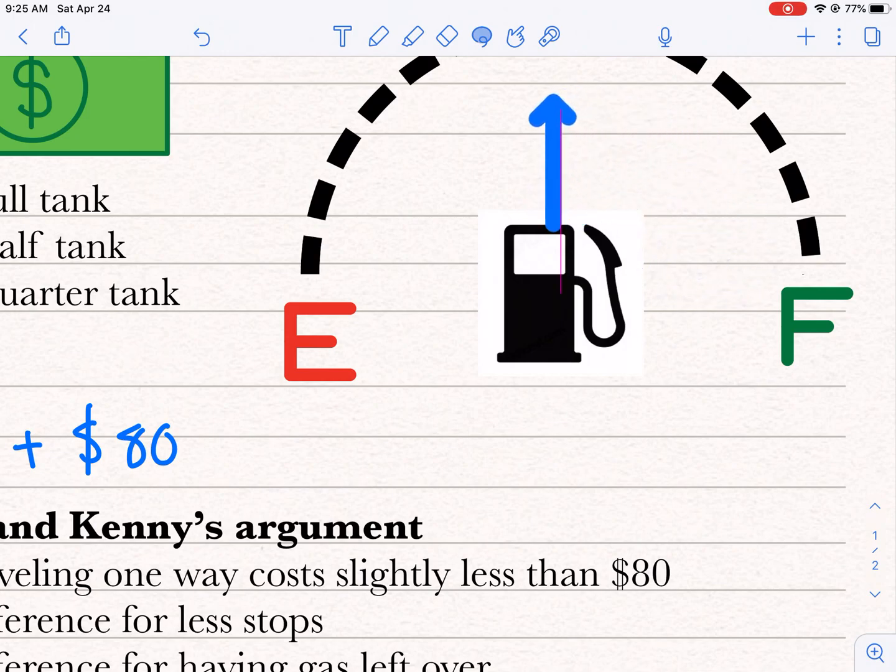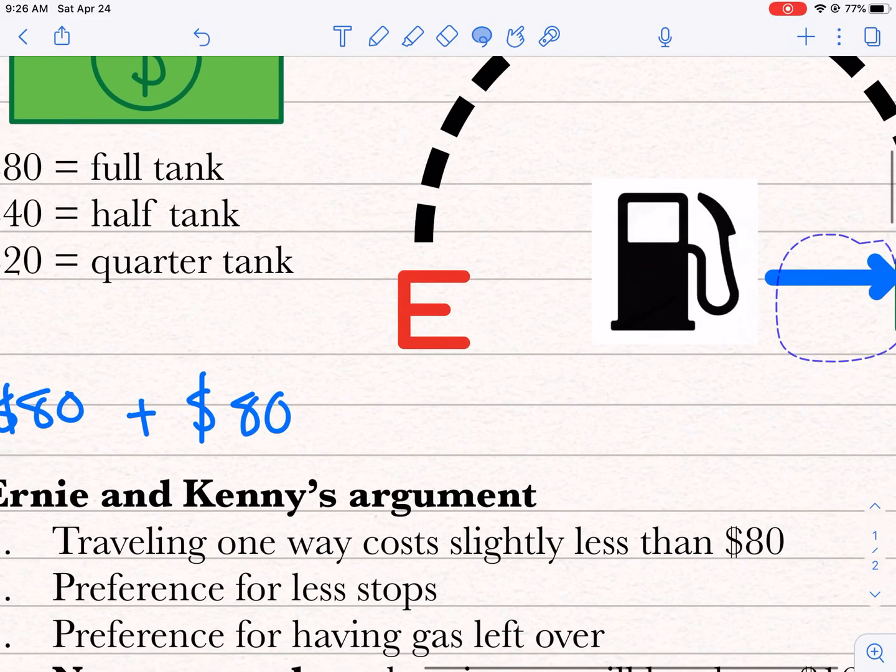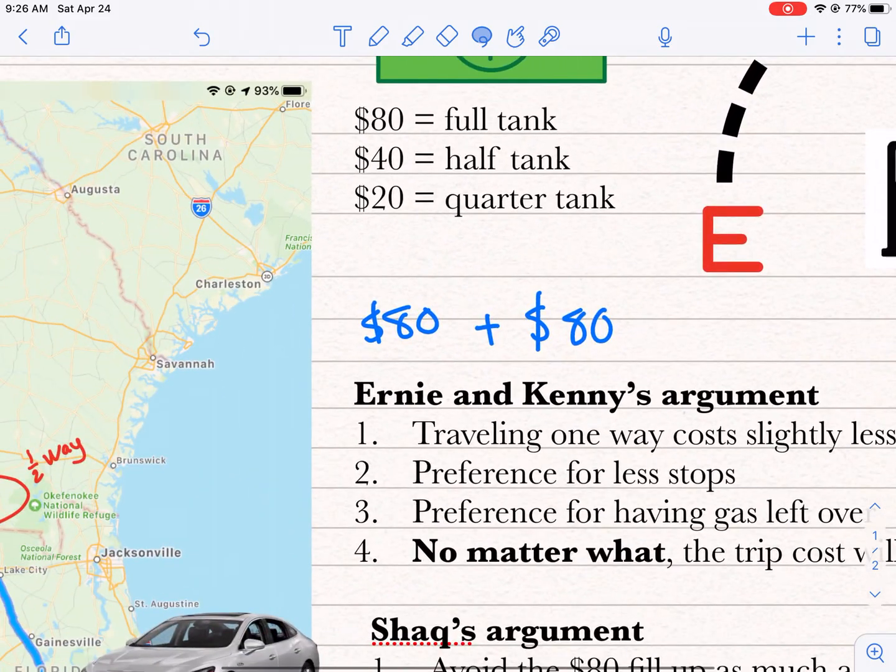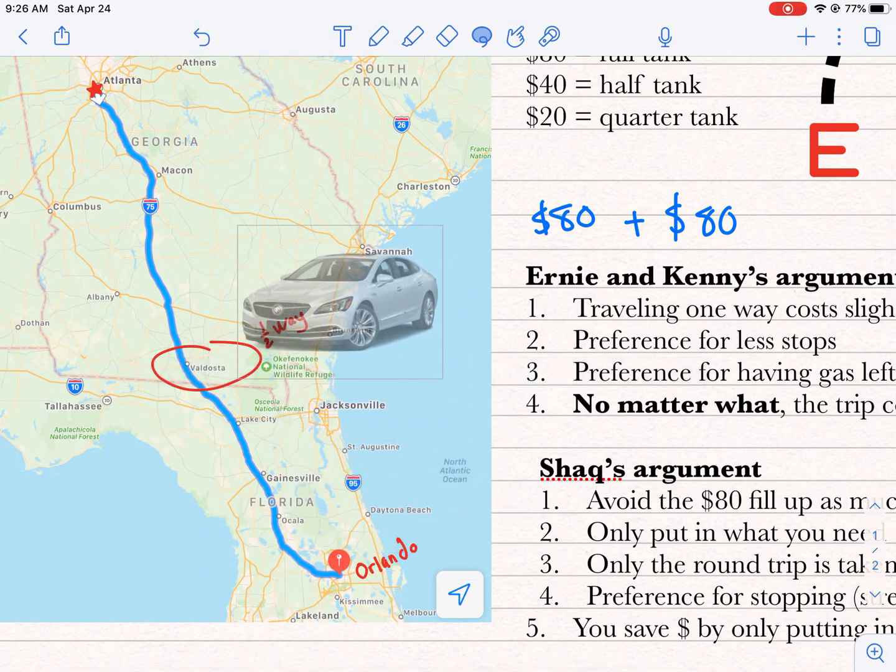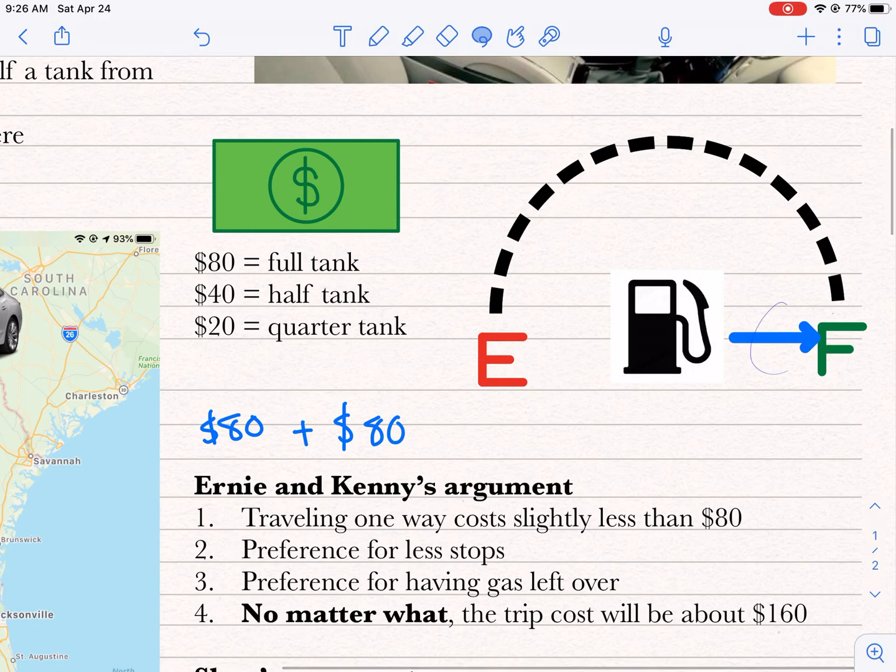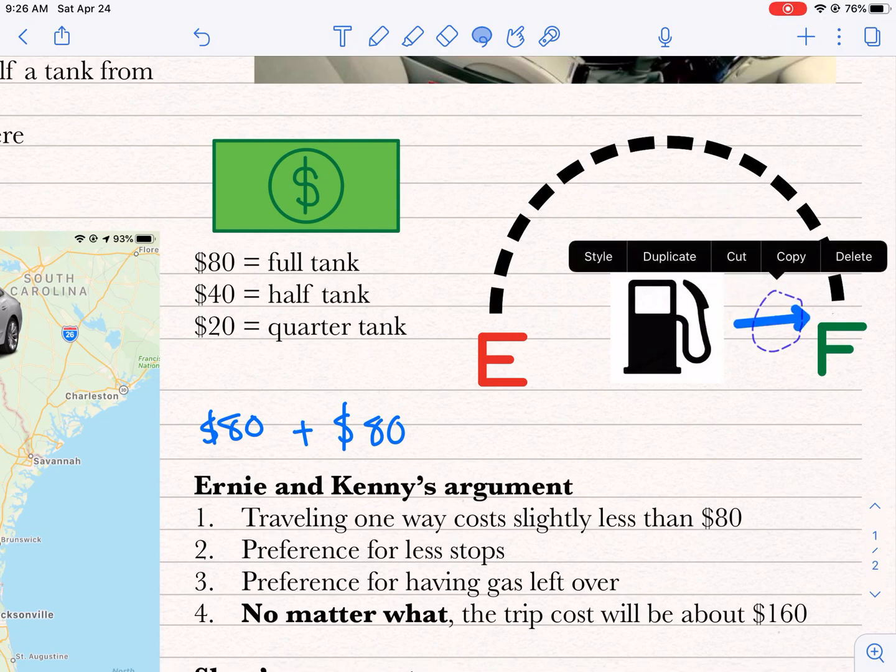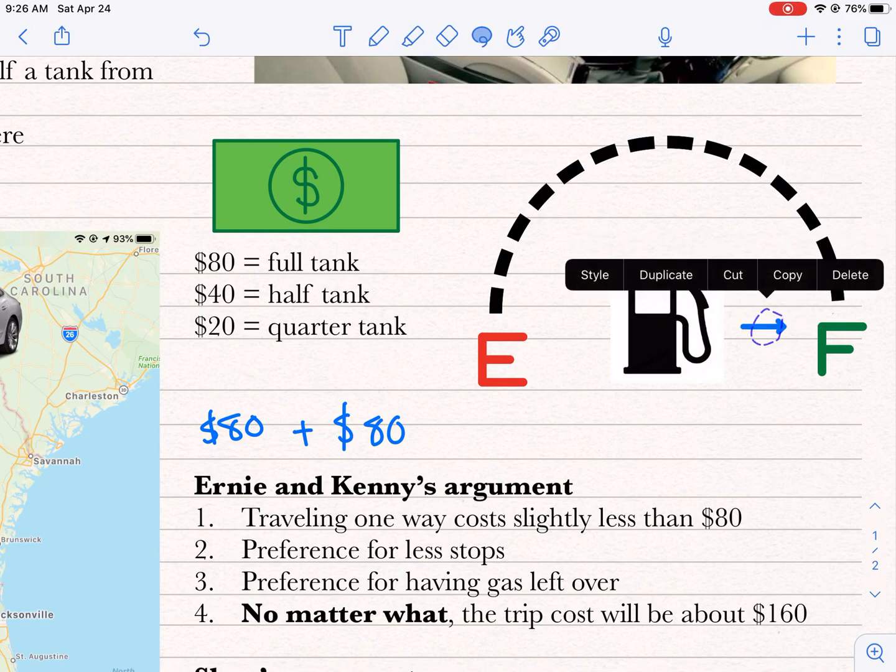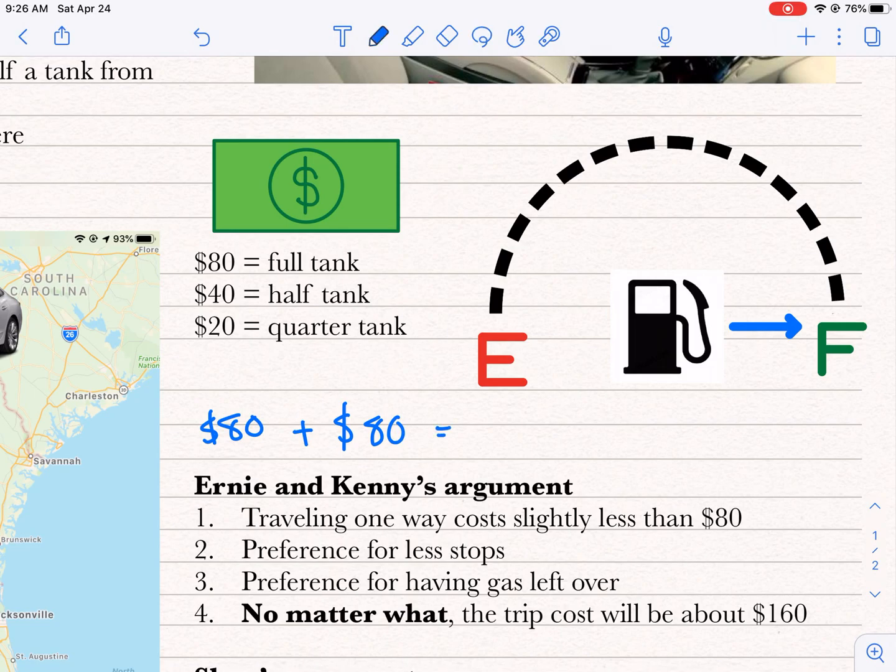So Ernie and Kenny are both saying they'll get to empty, and at that point you need to spend another $80, and this will take you back to full. Now they can drive the full distance back from Orlando all the way to Atlanta, at which point they're getting close to empty again. So that's their argument. They have to spend about $160 on the whole trip.